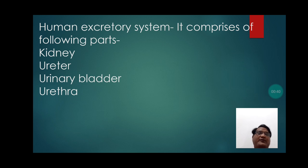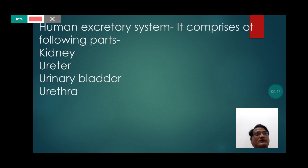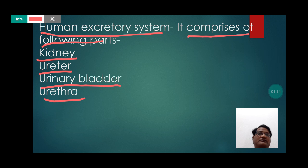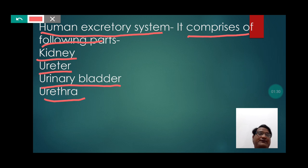The Human Excretion System comprises of the following parts: kidney, ureter, urinary bladder, and urethra. The main function of the Human Excretion System is to excrete or remove the nitrogenous waste material — that is urea — in the form of fluid via the urethra.